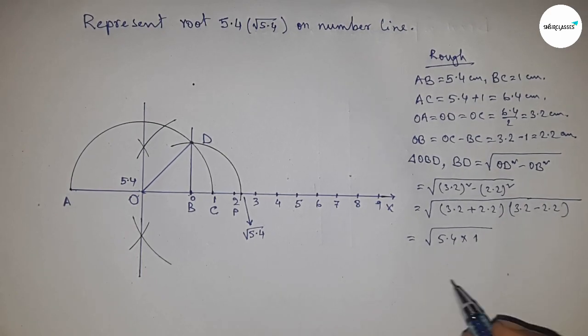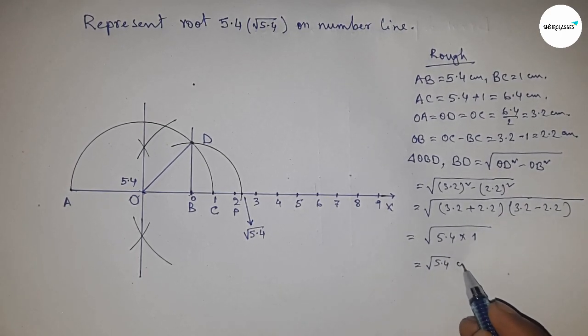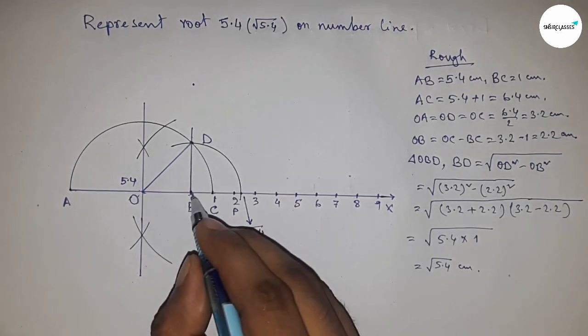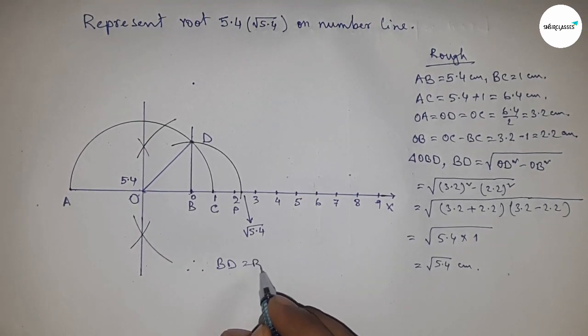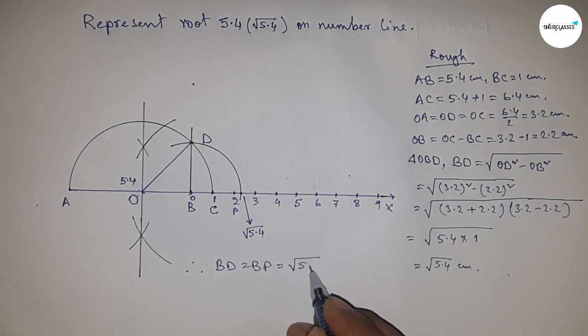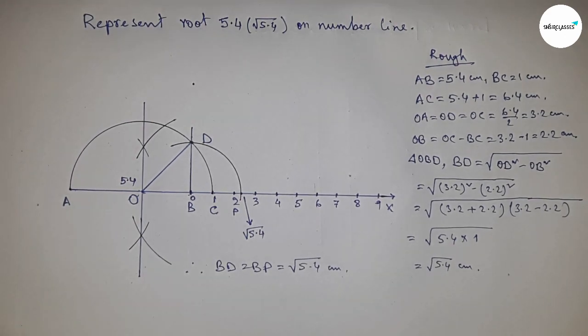So root of 5.4 centimeters. Therefore, distance BD and BP are equal to root 5.4 centimeters. That's all. Thanks for watching, please like, comment, and share my video. Thanks.